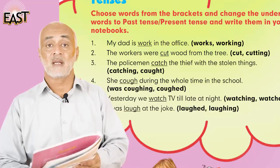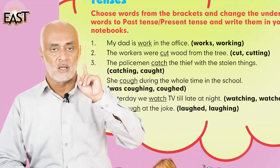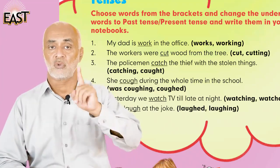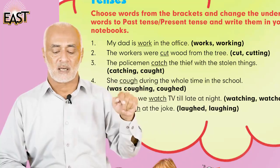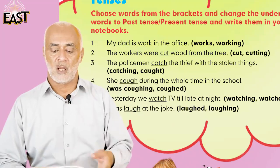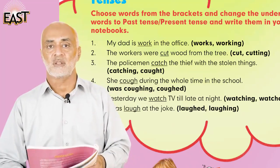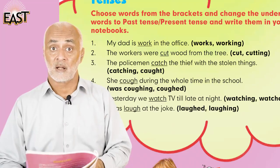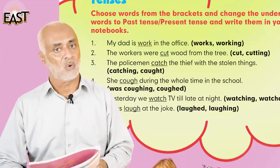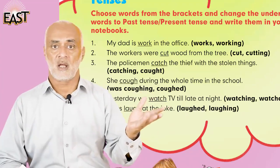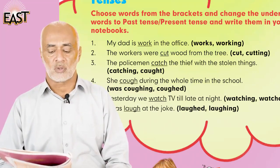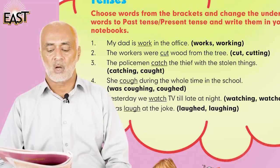You are going to listen to each one and say it with me, then do each sentence in your copy. Number one: 'My dad is work in the office.' So what will it be? 'My dad works in the office,' or 'my dad is working in the office,' or 'my dad was working in the office.' You can make any one or all three of these sentences.